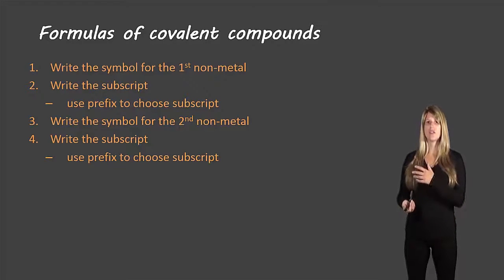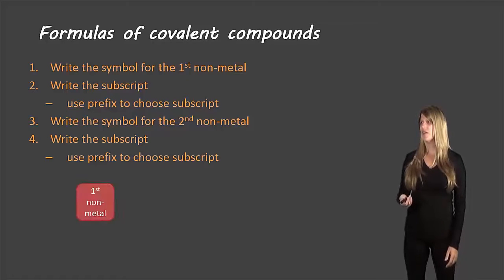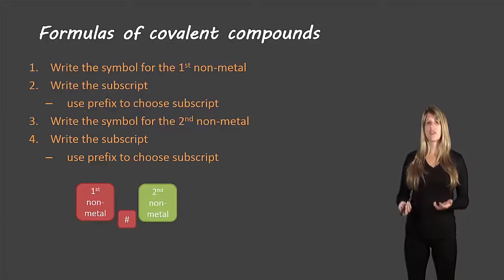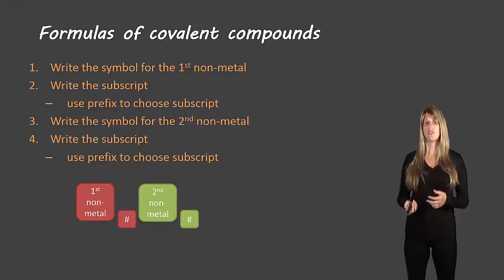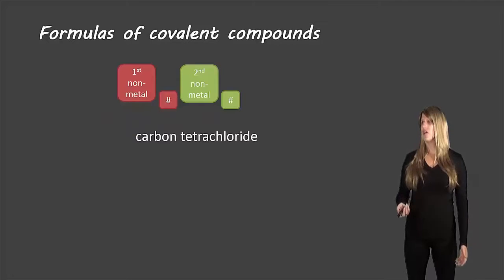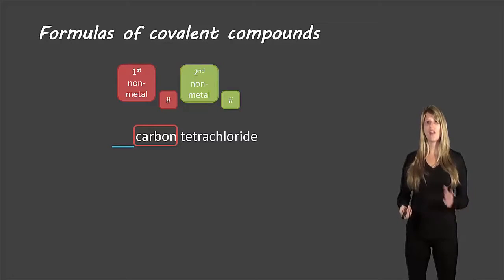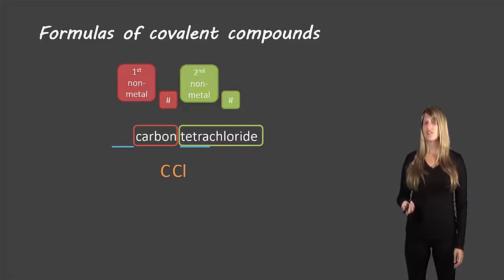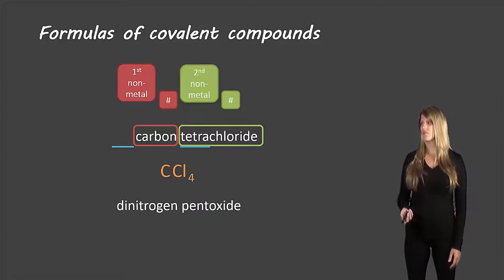Now let's look at how to write the formulas. You write the symbol for the first non-metal, then write the number required of that non-metal using the prefix to determine the subscript. Then write the symbol for the second non-metal, and write the subscript using the prefix. For example, carbon tetrachloride: carbon is the first non-metal with no prefix, meaning there's one — so just C with no subscript. Tetrachloride is the second non-metal: tetra means four and chlorine is Cl, so we write Cl with subscript 4. The formula is CCl4.